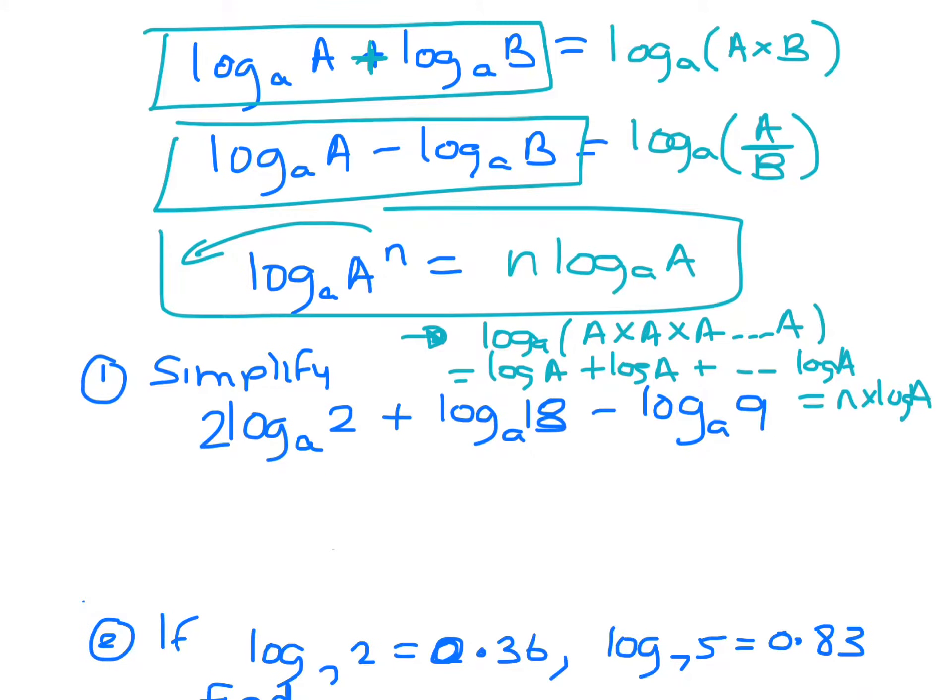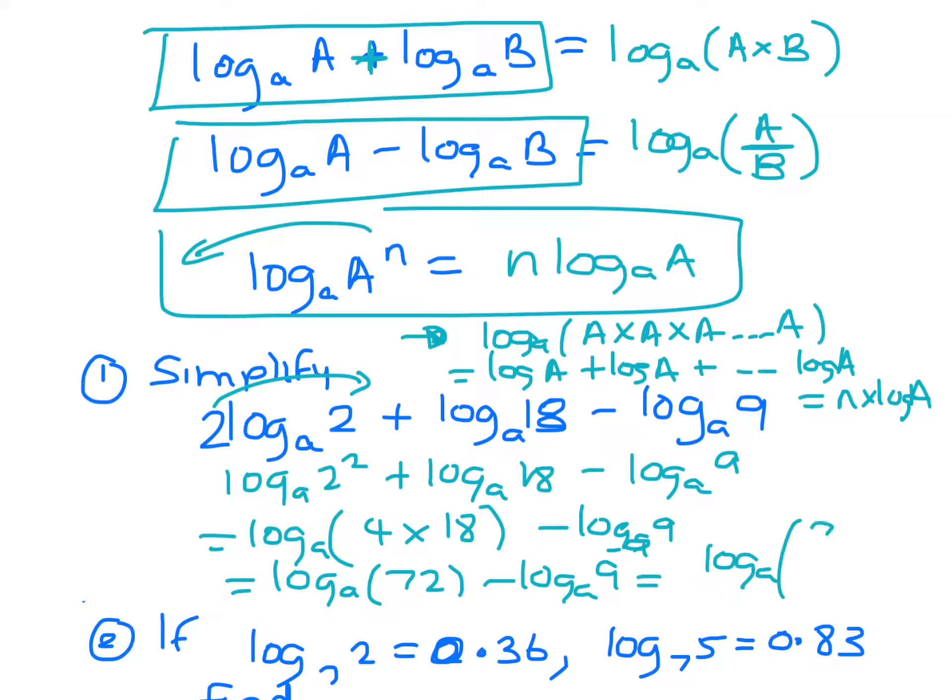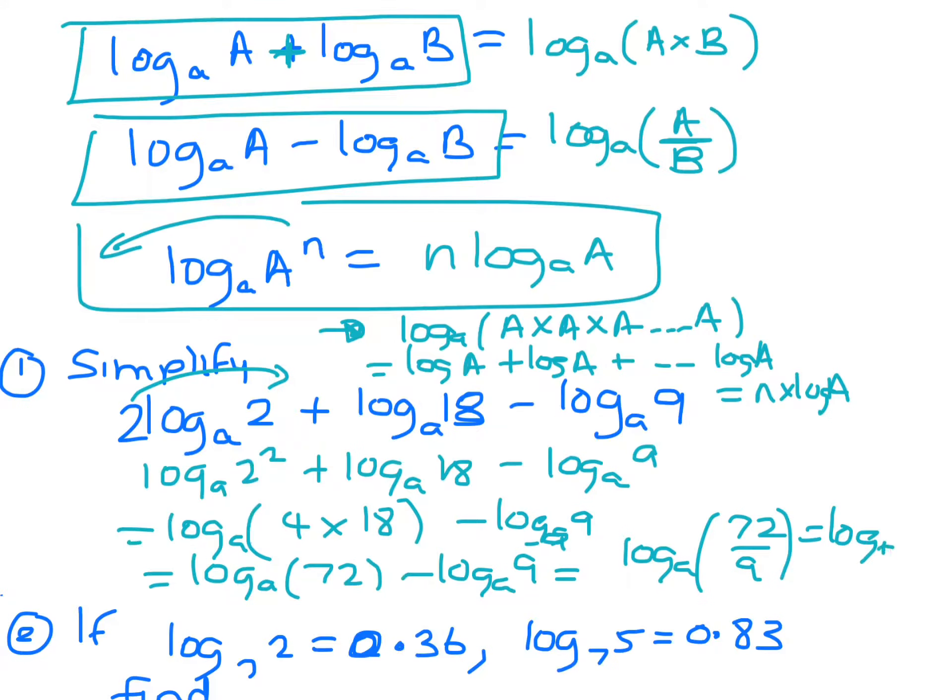Okay, so we're just going to apply these rules to these questions. So if we look at this, you can't simplify that as one whole log unless you bring that indice of 2 up. So that's log a 2 squared plus log a 18 minus log a 9. So that's log a 2 squared is 4 times 18 minus log a 9. So log a 4 times 18 is 72 minus log a 9. So now that's minus, so it's division, so it's 72 on 9, which is log a 8.